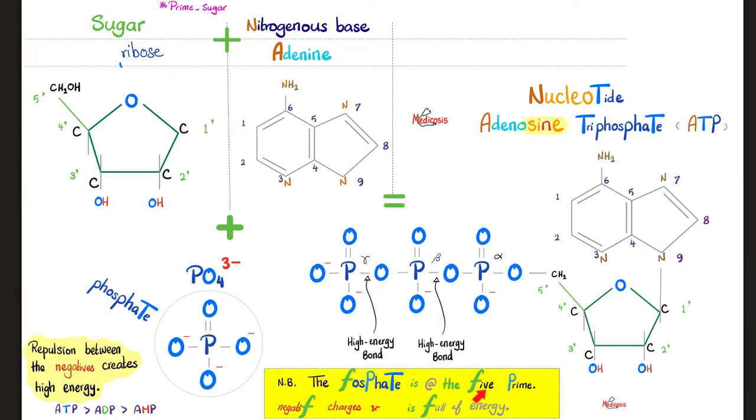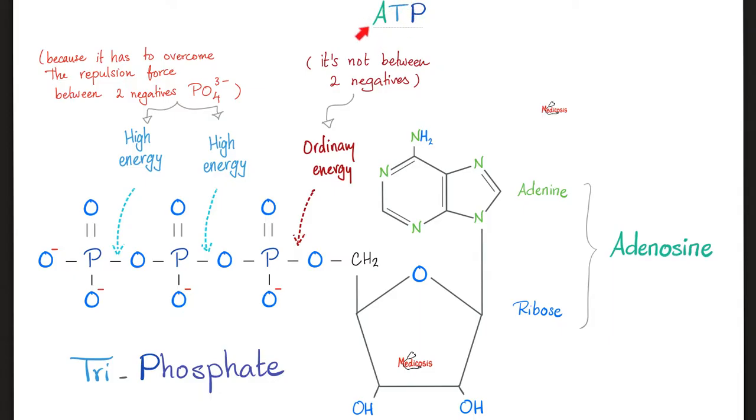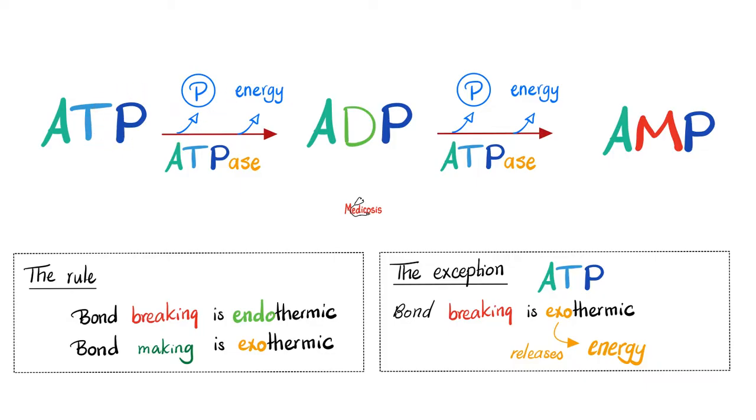If you add one phosphate, we'll call it adenosine monophosphate. That's a nucleotide. If you add two phosphates, now it's called adenosine diphosphate. That's also a nucleotide. If you add a third phosphate group, you will get adenosine triphosphate, also a nucleotide. As we've said before, the phosphate is at the 5 prime end of the sugar. It carries negative charges and phosphate is full of energy. Why full of energy? Because we have repulsion forces between the negatives.